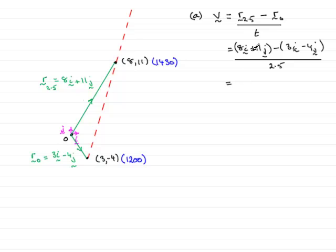So working that out, you find that the top comes to 8i minus 3i, which is 5i. And then we have 11j minus minus 4j, which is 15j. Don't forget to underline your vectors there, all divided by 2.5. And dividing each of those vectors, i and j, by 2.5, gives a final result of 2i plus 6j. And that's the velocity vector, then, of the boat, B.